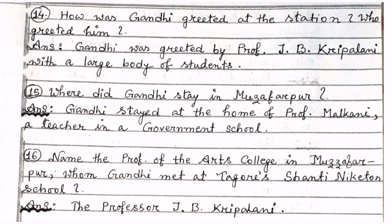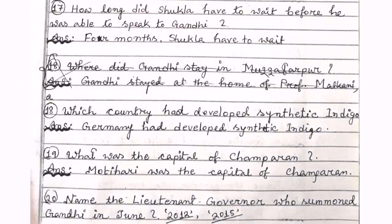Where did Gandhi stay in Muzaffarpur? Gandhi stayed at the home of Professor Malkani, a teacher in a government school. Number sixteen: name the professor of the Arts College in Muzaffarpur whom Gandhi met — that was Professor J.B. Kripalani. How long did Shukla have to wait before he was able to speak to Gandhi? For four months. Which country developed synthetic indigo? Germany developed synthetic indigo.